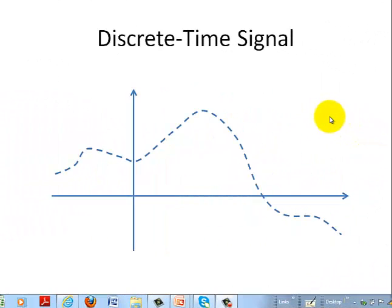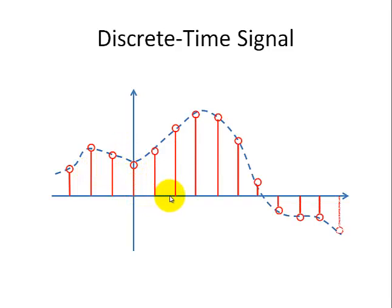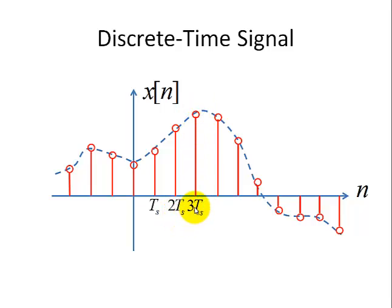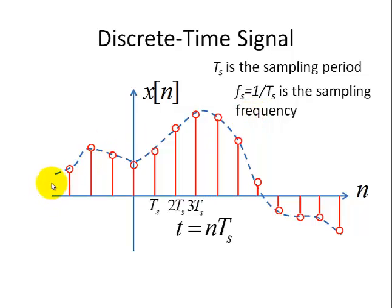Now, we're going to show mathematically the relationship of the continuous time signal, shown here in the dashed line, and the discrete time signal where we captured a specific set of values of X of T at specific values of time. Here we have this value captured at Ts, this value at 2Ts, this value at 3Ts, and so on. We let T equal N·Ts, where N is an integer, Ts is the sampling period, and 1 over Ts — denoted as Fs — is the sampling frequency. This series of values is called Xn.